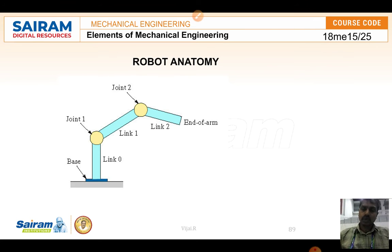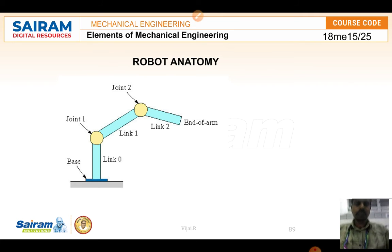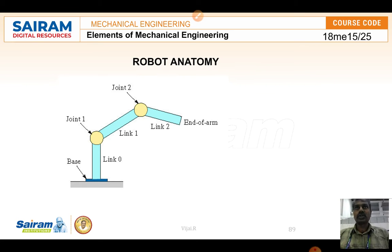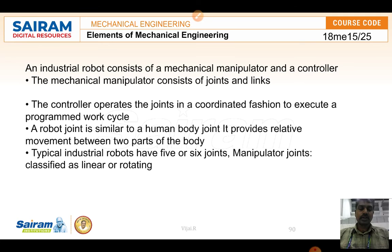Now let us see how the robot anatomy is structured. Robot anatomy is the body structure — how it will look and what important parameters it requires. The first element is the base. Robot anatomy consists of a base, a column, and then links and joints. Different types of joints are used: rotary joints, revolving joints, orthogonal joints, and linear joints. A mechanical robot consists of these joints and links.